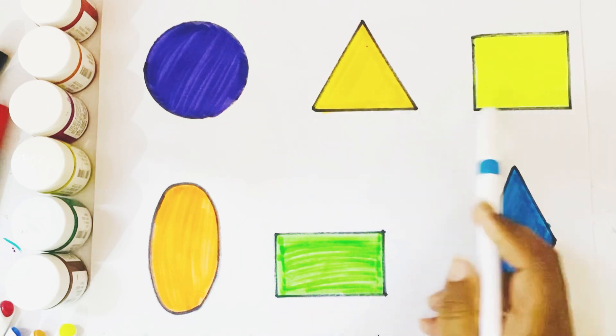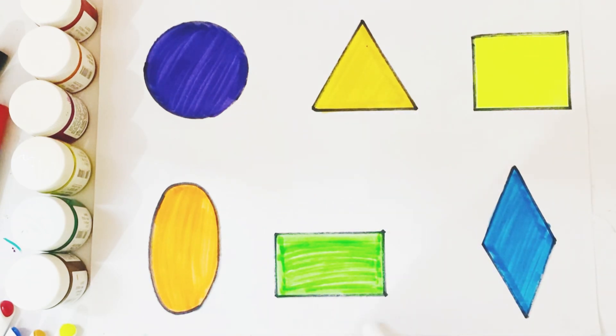Circle, triangle, square, oval, rectangle and this one is diamond shape.